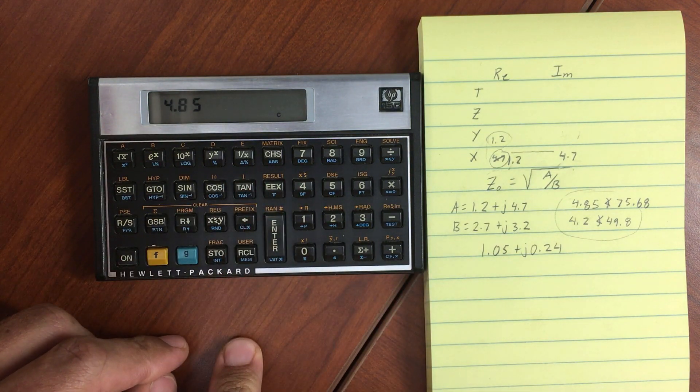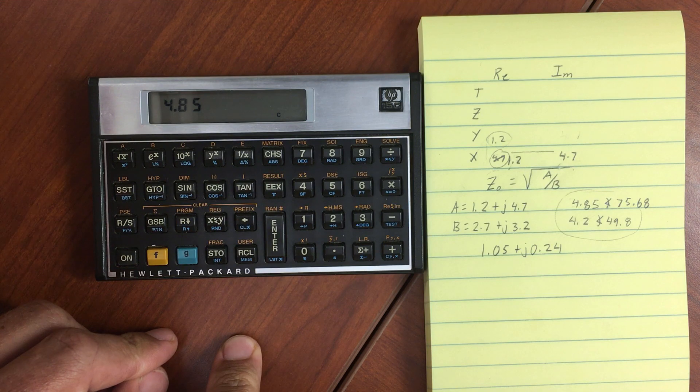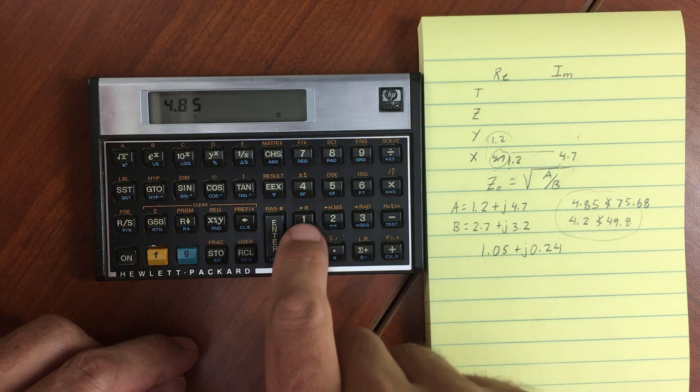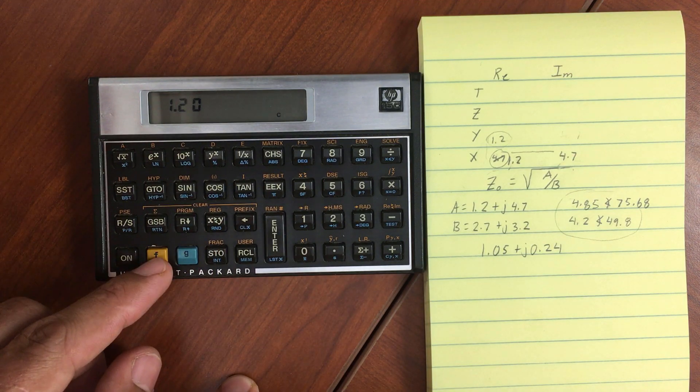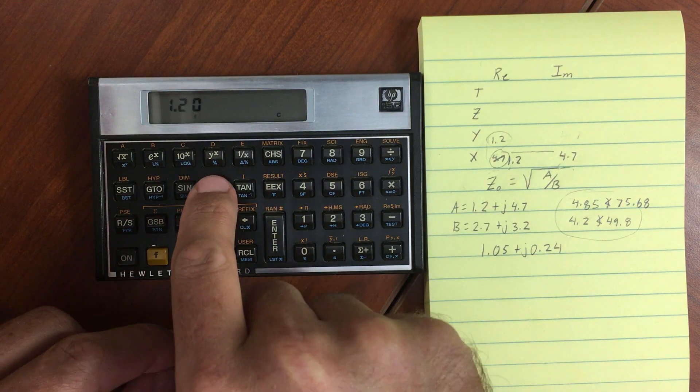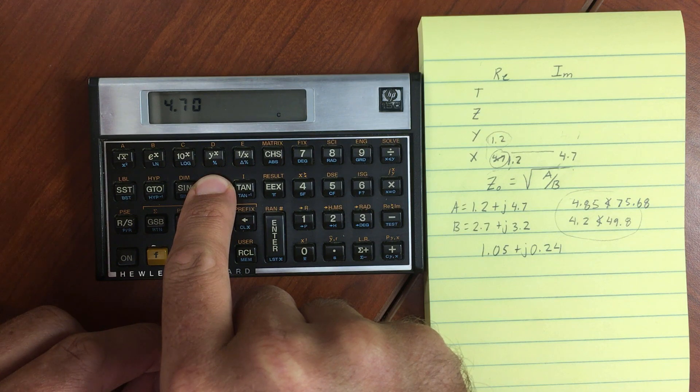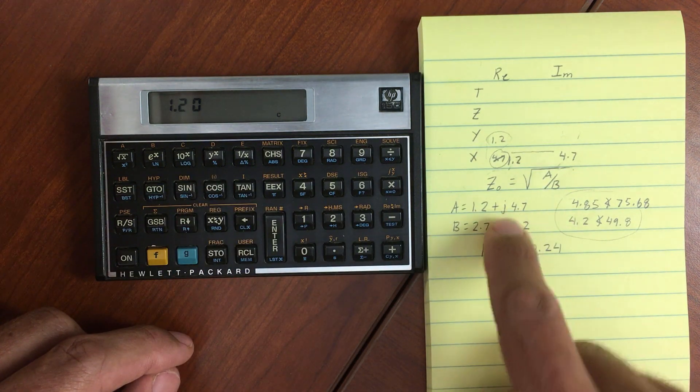But now we need to convert that to rectangular. So I can do a gold shift, rectangular. You'll see I have 1.2 in my real portion of the stack. And if I look at the imaginary, I should have 4.7. So we've converted that to rectangular.